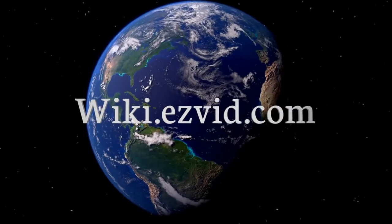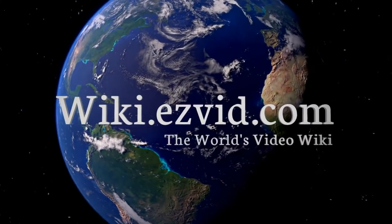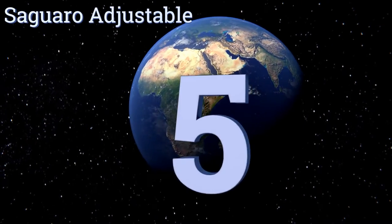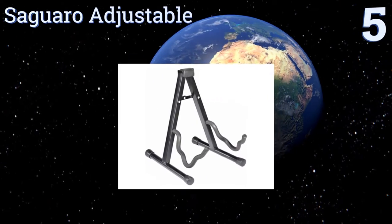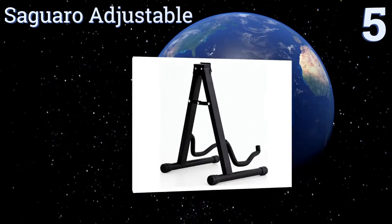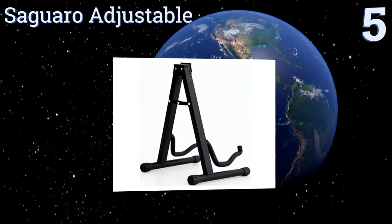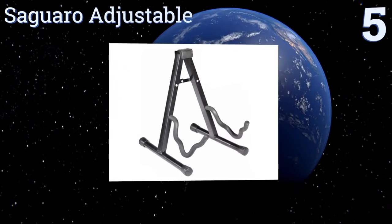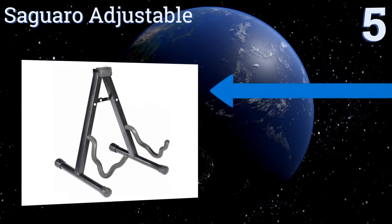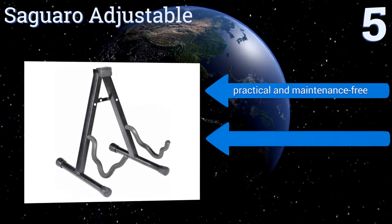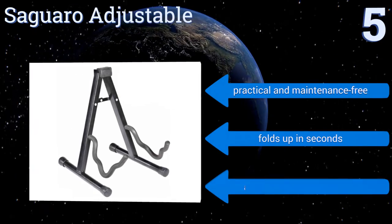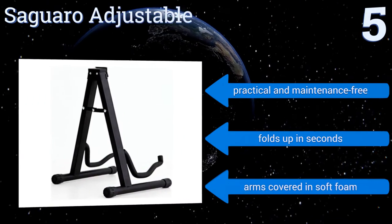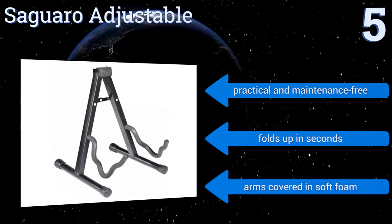At number five, fully collapsible with foam rubber for additional protection, the Saguaro Adjustable offers a sturdy A-frame design with a secure lock to keep cellos of all sizes wedged in place. As minimal setup is required, you can put it to use as soon as it arrives. It's practical and maintenance free and folds up in seconds. The arms are covered in soft foam.